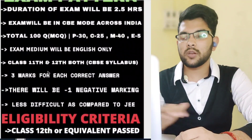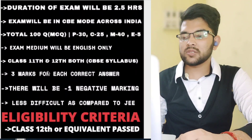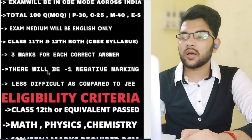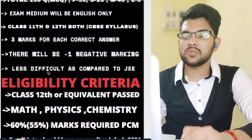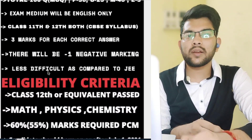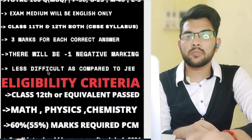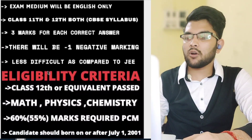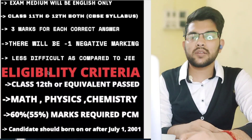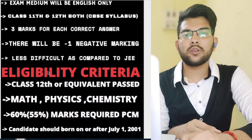Now let's talk about eligibility criteria. You must have passed Class 12 or an equivalent exam with compulsory subjects of Math, Physics, and Chemistry. The three-subject combined aggregate marks should be 60%, with each subject having 55% or more marks. Regarding the age limit, you should have been born on or after 1st July 2001 to be eligible for this examination.